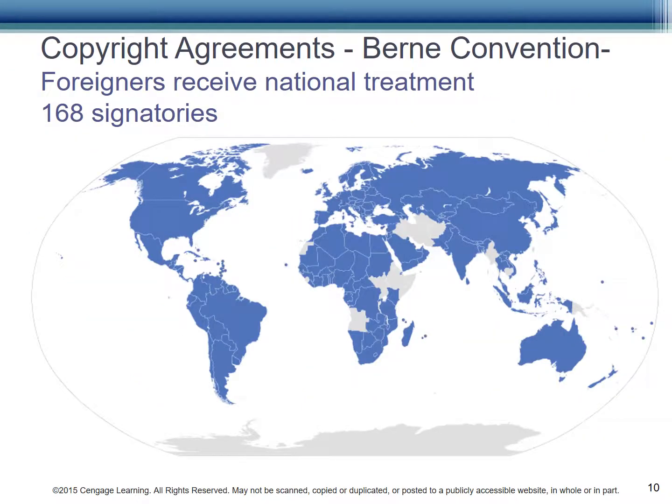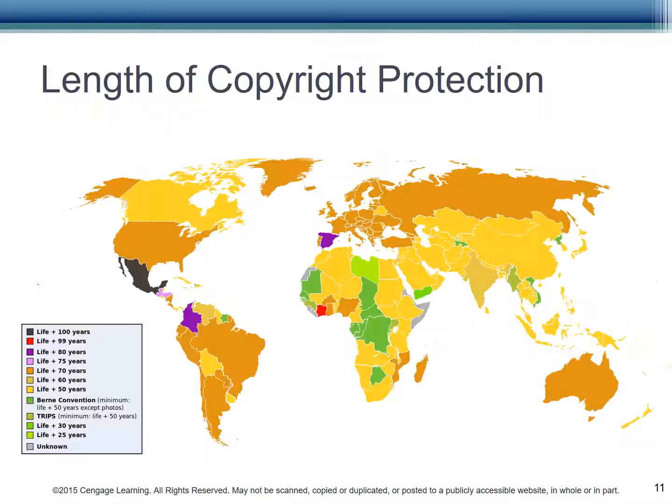The Bern Convention, which has 168 signatories, guarantees national treatment for foreigners who want to register a copyright in a country. National treatment means that you are treated the same as any other citizen of that country — not necessarily good or bad, just the same. The length of copyright varies with a wide range across countries.